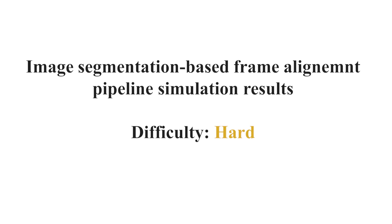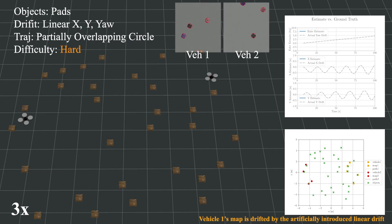Now, we test in a more challenging environment. Instead of constant, we introduced linear drifts in X, Y, and yaw, and flew two agents in partially overlapping circles. This makes it harder to perform frame alignments, since they have fewer commonly visible objects. Despite the challenges, our pipeline successfully estimates the drifts.